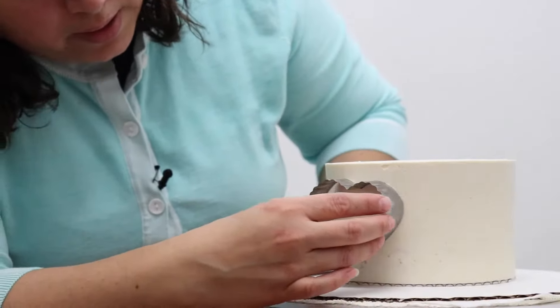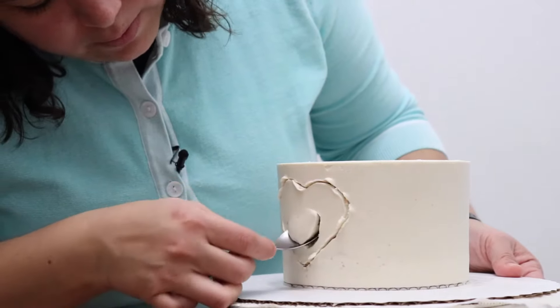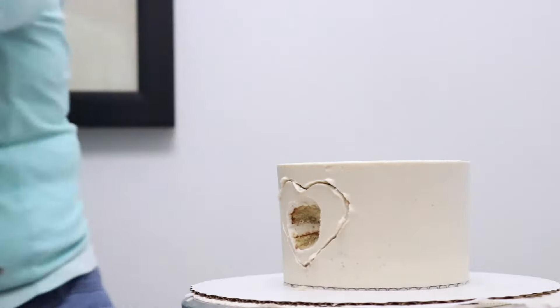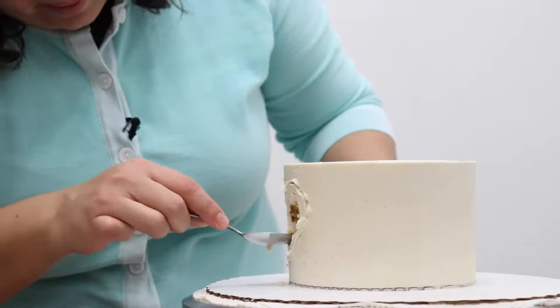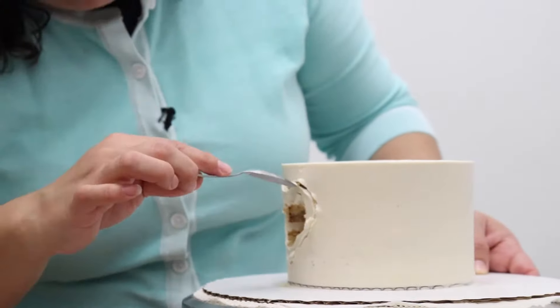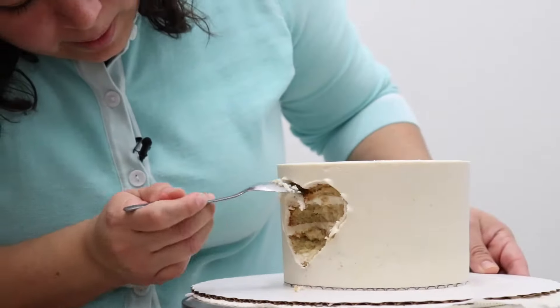With a cookie cutter, mark where we're going to be carving the cake. Use a spoon to remove that cake. Just make sure that it's kind of rounded inside, and the center of the heart needs to be a little bit deeper. Not so much on the edges of the heart.